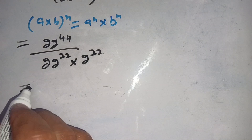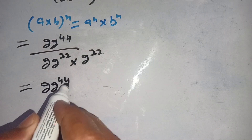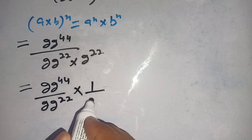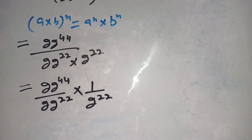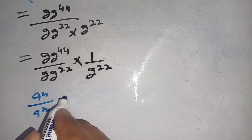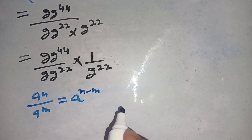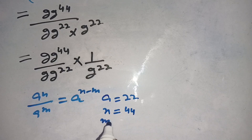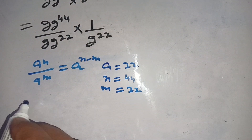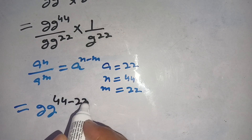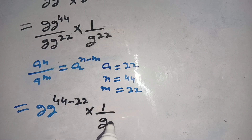Now we can write this as 22 power 44 divided by 22 power 22, times 1 divided by 2 power 22. We also know that a power n divided by a power m is equal to a power n minus m, where here a is equal to 22. So we can write it as 22 power (44 minus 22) times 1 divided by 2 power 22.